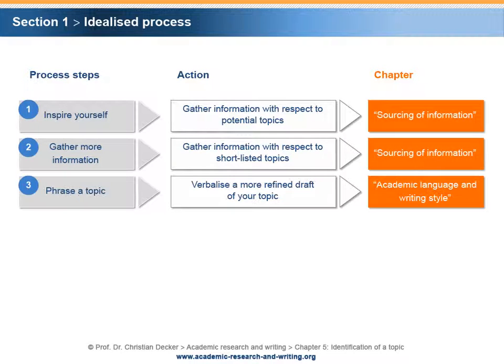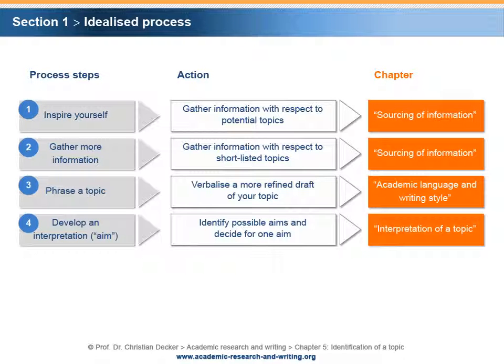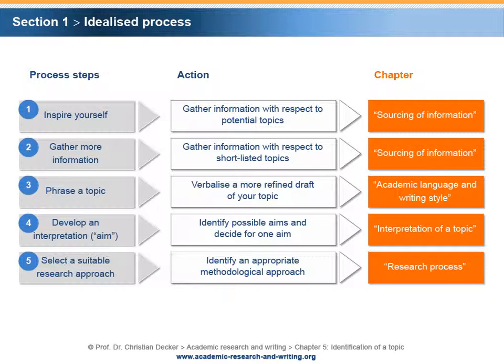Step 3 – Phrase a topic: Verbalize a more refined draft of your topic. The corresponding chapter is Academic Language and Writing Style. Step 4 – Develop an interpretation, or more precisely, an aim: Identify possible aims and decide for one aim. The corresponding chapter is Interpretation of a Topic.